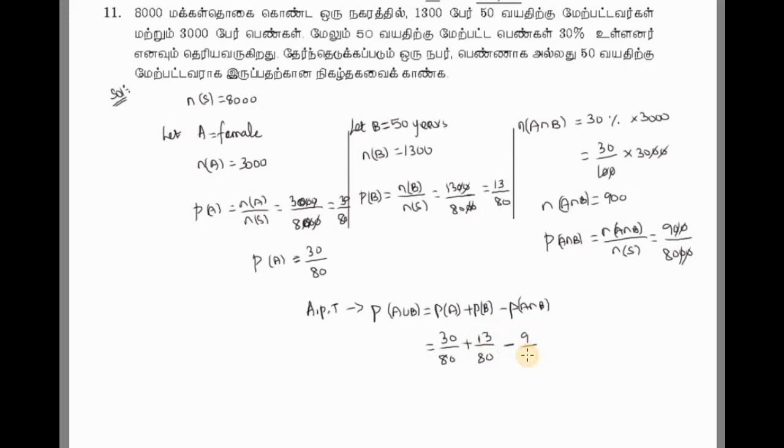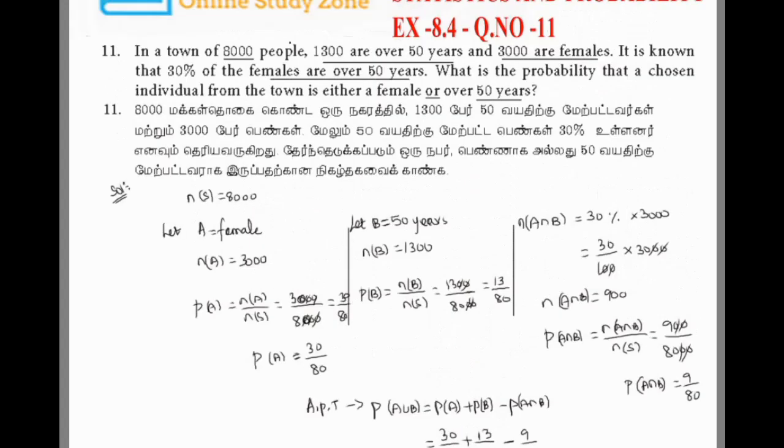P(A∩B) equals 9 by 80. So 80 is common. Adding them: 30 plus 13 equals 43, minus 9 equals 34. So 34 by 80. Canceling by 2, we get 17 by 40.